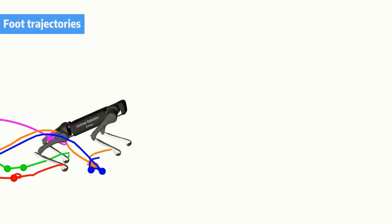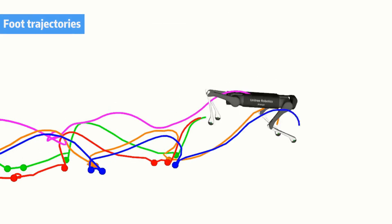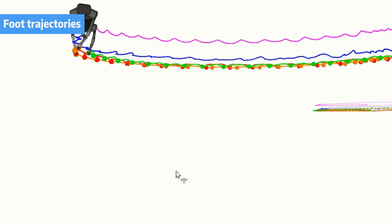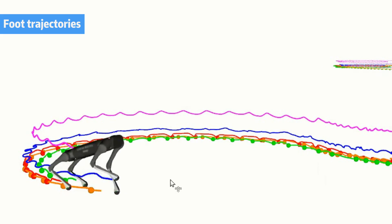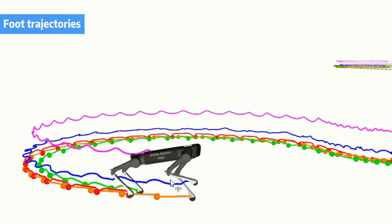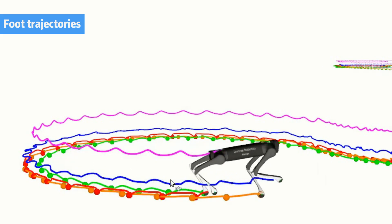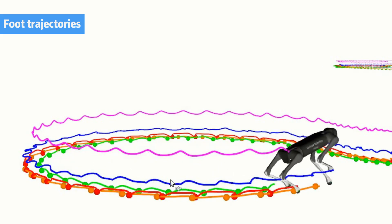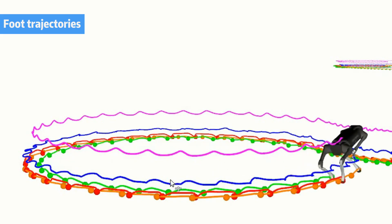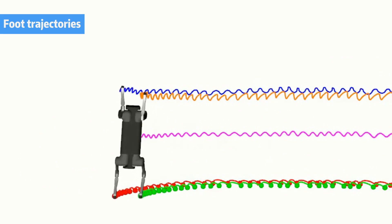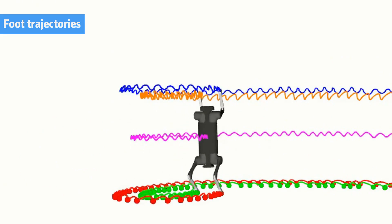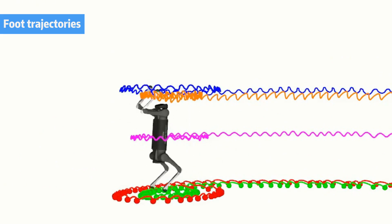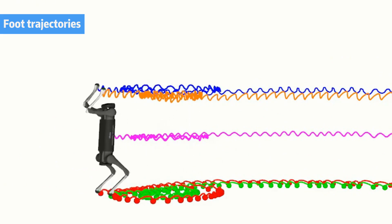We train an actuator net to address sim-to-real transfer. Here is the visualization of the foot trajectory and foot contact. The resulting controller can mimic the style of animal motion while maintaining command tracking capability.